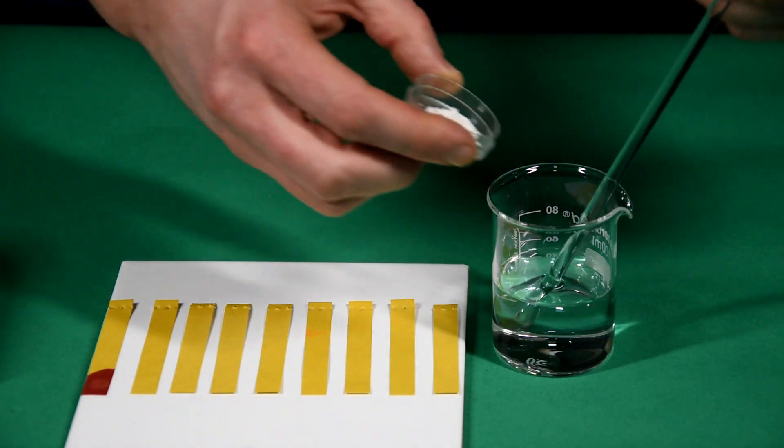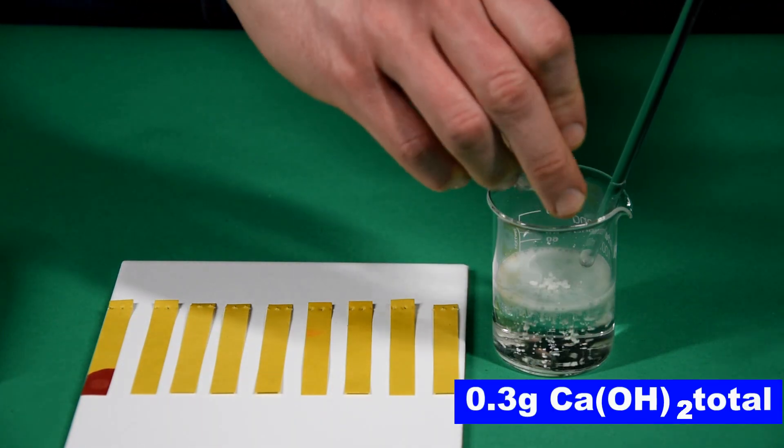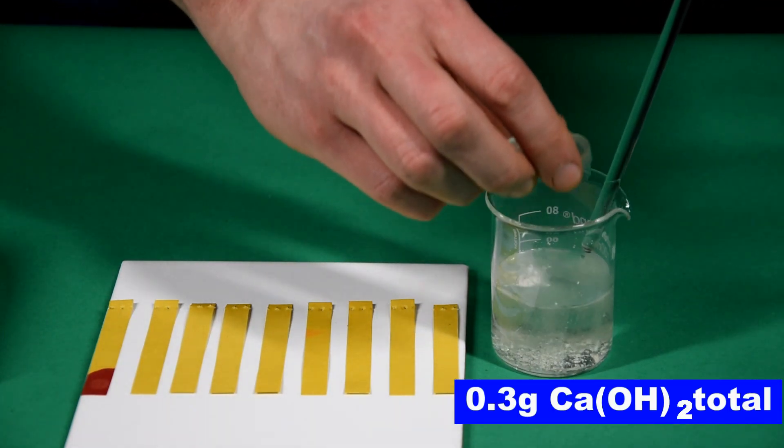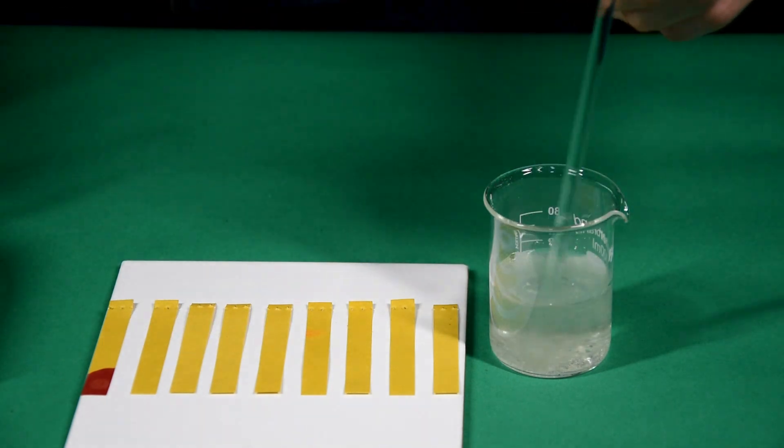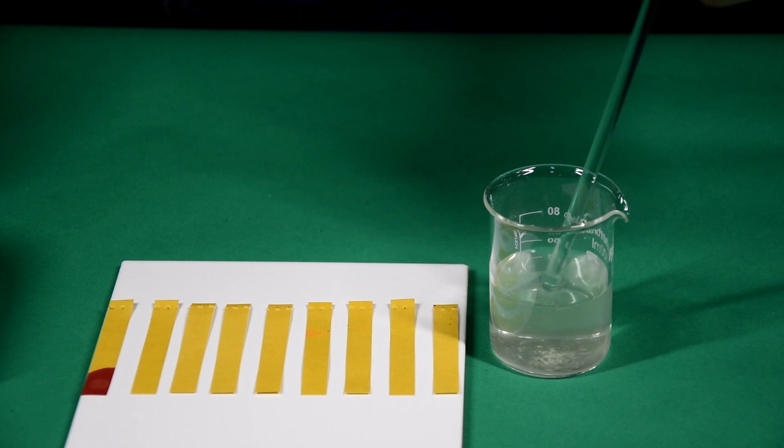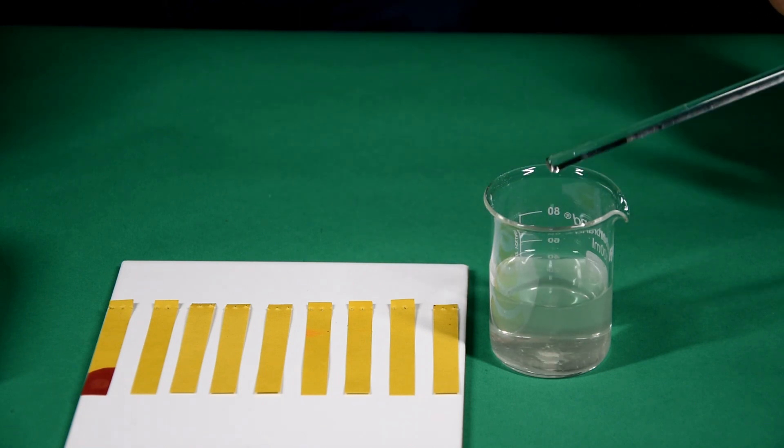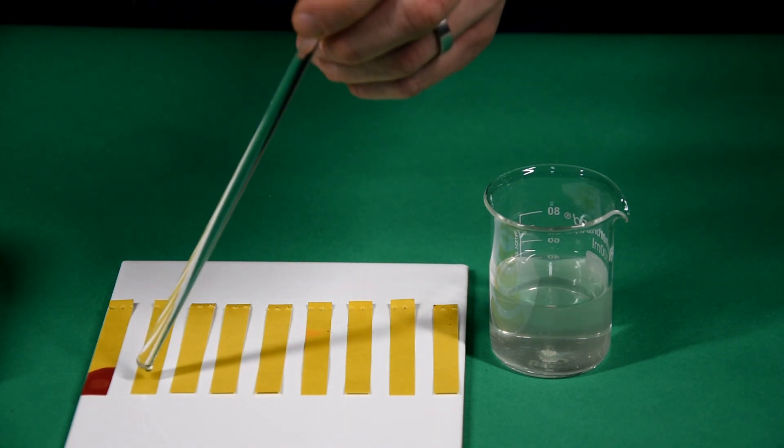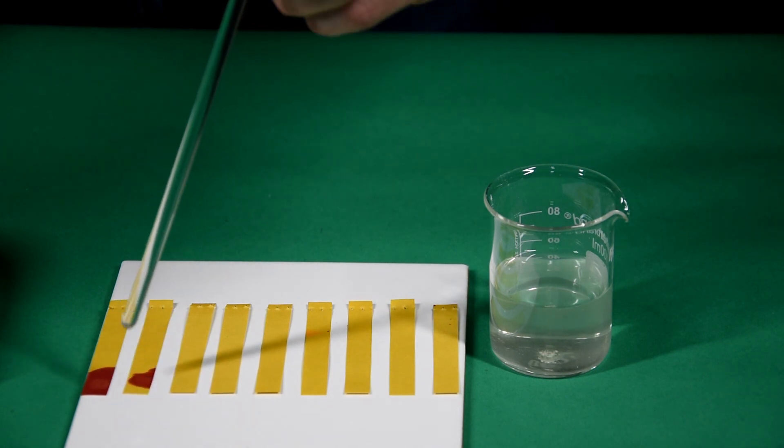Now add 0.3 grams of calcium hydroxide powder. And stir. Use the glass rod to place a drop on the second sheet of paper.